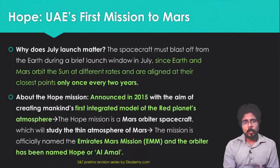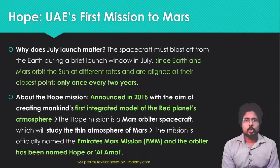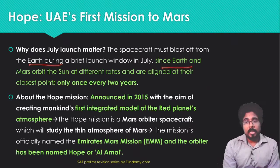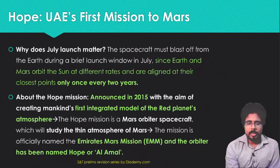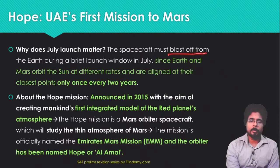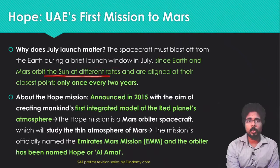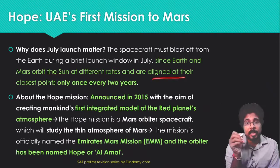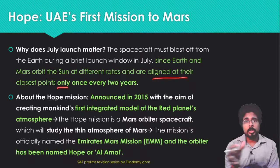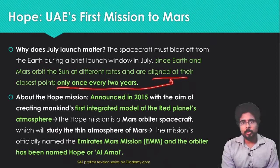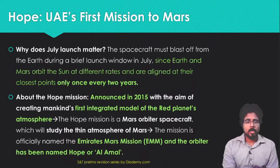Why was July selected as the launch month? July was selected because during that brief launch window, the Earth will be very close to Mars. The spacecraft must blast off during this brief window since Earth and Mars orbit the sun at different rates and are aligned at their closest point only once every two years. That is why UAE chose this date, launching in July.